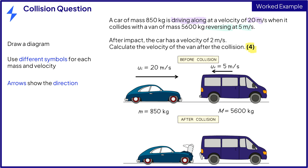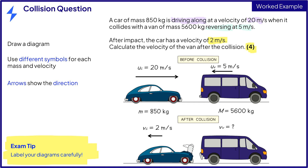The van is reversing, traveling backwards towards the car at five meters per second. After impact, the car must travel backwards because the van was reversing. The car has a final velocity of two meters per second. We have got to find the final velocity of the van, so let's add that into the diagram too. It is very important to add all the information to your diagram carefully.